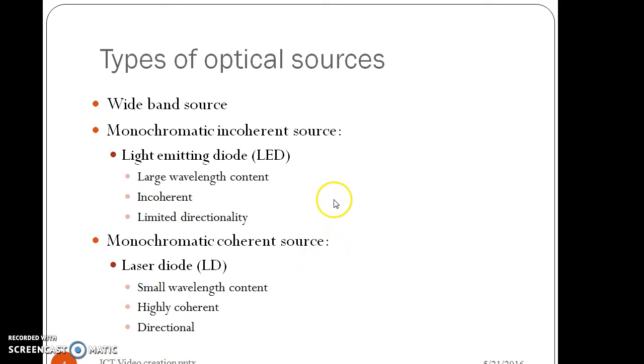LED is an example of incoherent source of light, whereas laser is a coherent source of light.